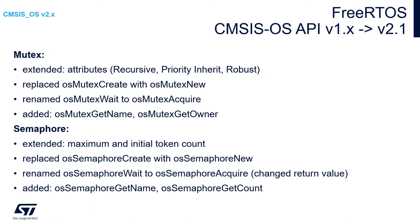Concerning mutexes, there are some differences between CMSIS-OS API version 1 and version 2. We have extended attributes: recursive, priority inherit, and robust. The create function is replaced with the new function. OS mutex wait has been renamed to OS mutex acquire, and there are two new functions: OS mutex get name and OS mutex get owner.